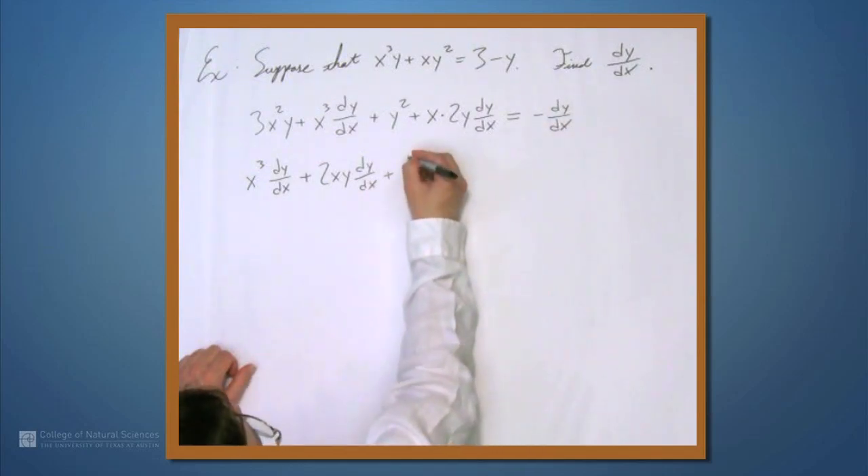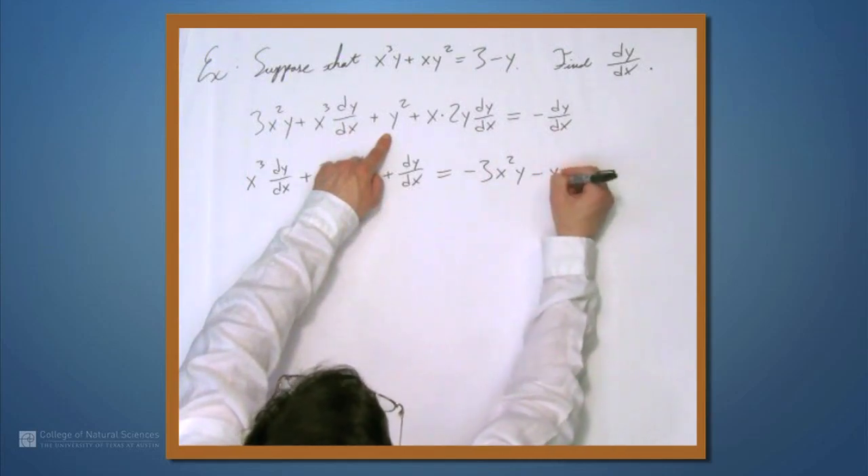Just like in the previous example, we've now done all the calculus involved in this problem. All that's left to do is solve for this quantity. So we'll move all the dy/dx terms to the left, all the non-dy/dx terms to the right. So we get x³ dy/dx plus this term, and I'm going to write it with the 2 out front. It's a little easier to see what's going on. So 2xy dy/dx, and let's move this negative dy/dx to this side, so plus dy/dx. What does this equal? Well, the 3x²y term doesn't have a dy/dx in it, so we'll move that to the other side to get negative 3x²y, and likewise this y² so we get minus y².